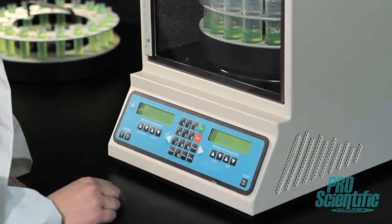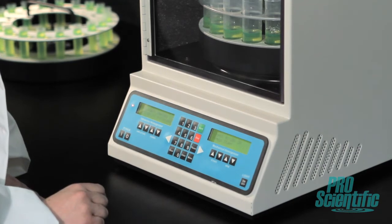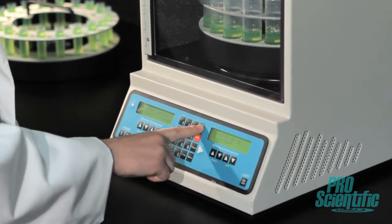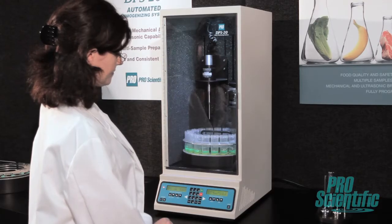And there's no need to worry about a noisy instrument in your lab. All homogenizing occurs inside the DPS20's sound abating enclosure. And with just a click of a button, you can turn on the interior mounted LED lighting for a full view inside.